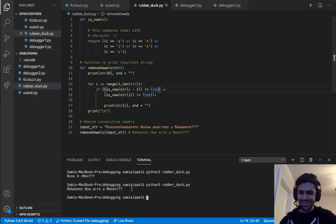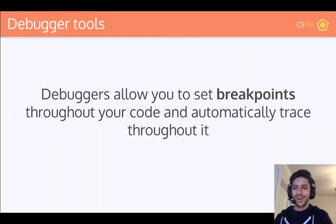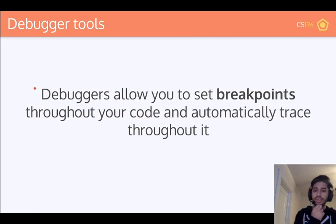Alright, well that was fun. I hope that helped you guys understand what rubber duck debugging looks like and how it helps finding issues. That was actually a pretty tough problem. So we went over two tips and tricks for debugging: we talked about print line debugging, which is very powerful, and then we also talked about rubber duck debugging. Now I want to talk about debuggers. Debuggers allow you to set breakpoints throughout your code and automatically trace throughout it.